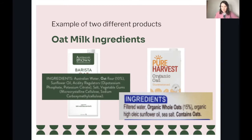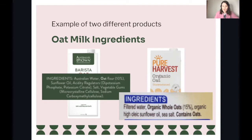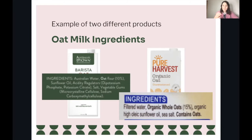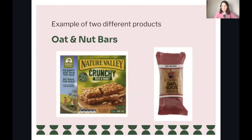For me, I'd be going for Pure Harvest because there's less in it. Filtered water is number one, meaning it's the most. Then we've got organic whole oats at 15%. On Australians Own, we've got water and oat flour at 10% — could be a bit of a difference there. Then you've got sunflower oil and sea salt, whereas the other one has a lot more ingredients I'm not even going to try and say.